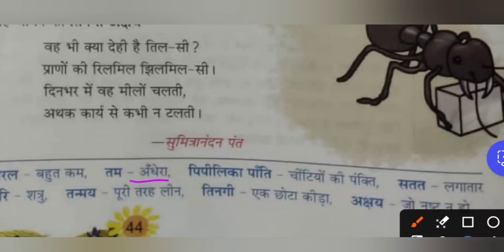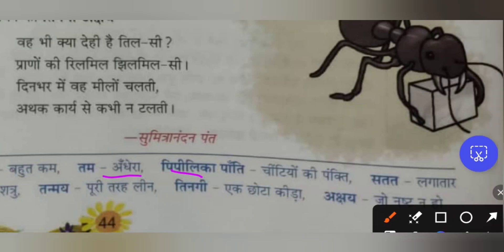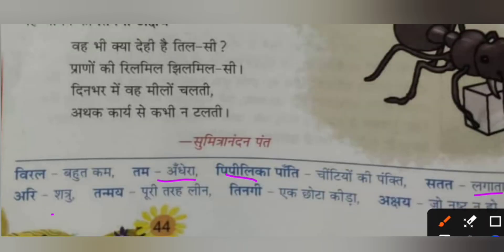Tham means andhera — darkness. Pipilika paanthi: pipilika is Sanskrit for ant, and paanthi means line — the queue, the row. So chinti ki paanthi means the line of ants. Satat means lagataar — continuously. Ari means shatru — enemy. Tanmai means puri tarah lean — fully involved.